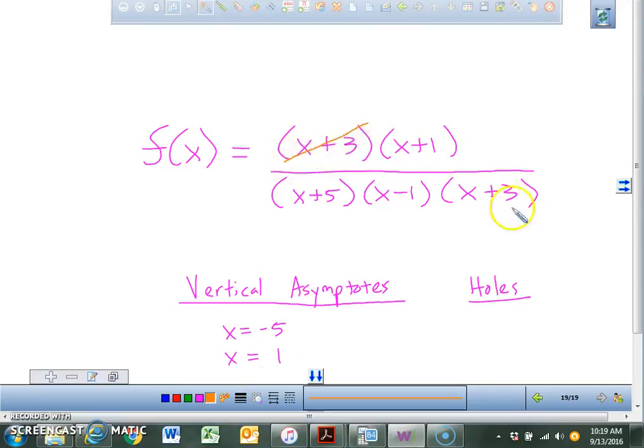X equals 1 is correct. Now, look what happens. These cancel out. So we don't have an asymptote at x equals negative 3. We have a hole at x equals negative 3. So these right here, these don't cancel out, because even though there's x plus 1 and x minus 1, they don't cancel out. They're not the exact same binomial.